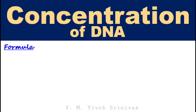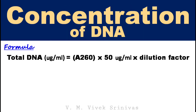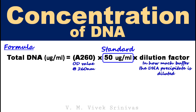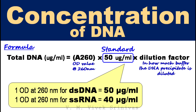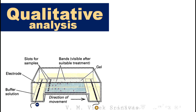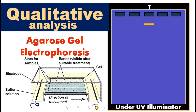Quantitation of the DNA: Use the following formula to determine the concentration of DNA. Total DNA equals OD value at 260 nm multiplied by 50 multiplied by the dilution factor. The value 50 is a standard for double-stranded DNA. For qualitative analysis, run the DNA sample through agarose gel electrophoresis to visualize the DNA bands.